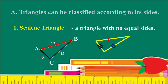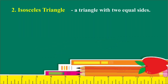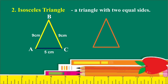The second kind of triangle is the Isosceles Triangle — a triangle with two equal sides. For example, triangle ABC where AB is 9 cm, BC is 9 cm, and AC is 5 cm. It is an Isosceles Triangle since it has two equal sides. Some figures are illustrated with two same markings on the equal sides.